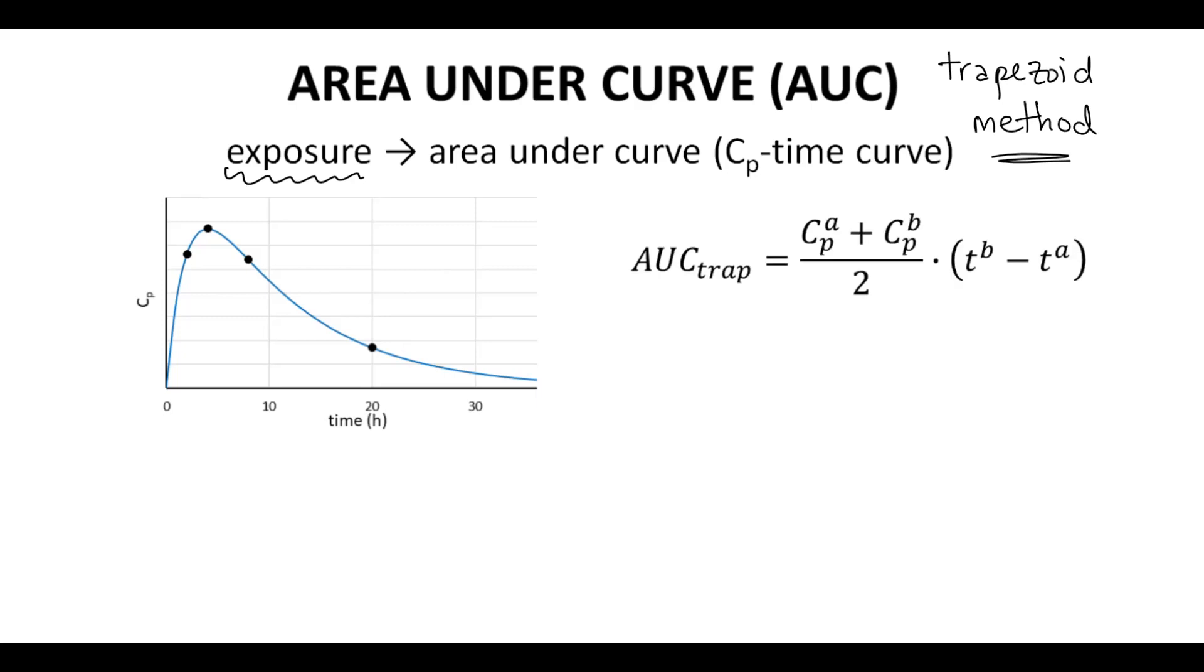In the trapezoid method, the curve is divided into regions split between the data points. AUC is calculated by adding the areas between data points as trapezoids.